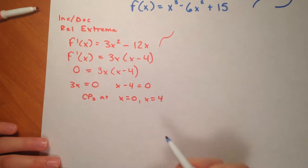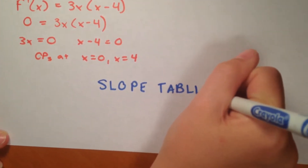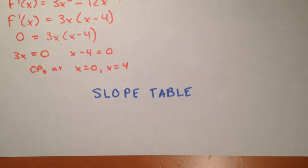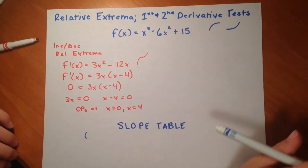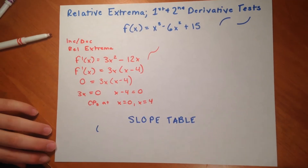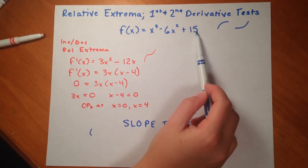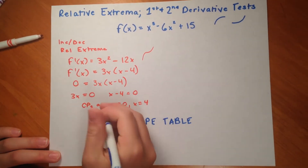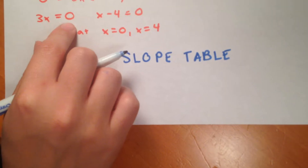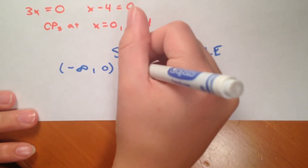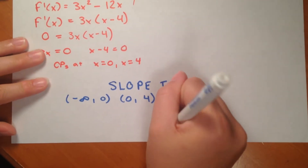Now that we have our critical points, we can set up our slope table. The slope table is key in organizing all of the information we know about this function in order to determine concavity, increase and decrease, and the extremum. Because we weren't given a bound to this equation, we assume it's negative infinity to positive infinity. So the intervals are: negative infinity to 0, then 0 to 4, and then 4 to positive infinity.